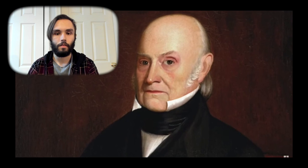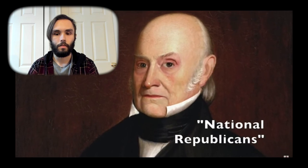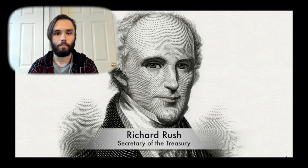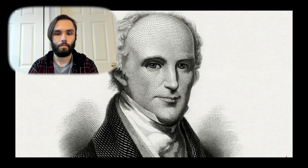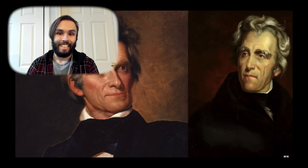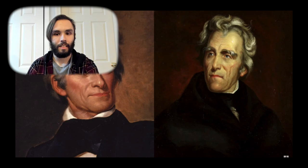President Adams was re-nominated by the endorsement of multiple state legislatures and partisan rallies. There was no caucus for his nomination either. Supporters of Adams called themselves National Republicans. Secretary of the Treasury Richard Rush officially ran as Adams' running mate. Wait — wasn't John Calhoun his vice president? Well, yes, but Calhoun had decided to run for re-election as Jackson's running mate, interestingly enough.